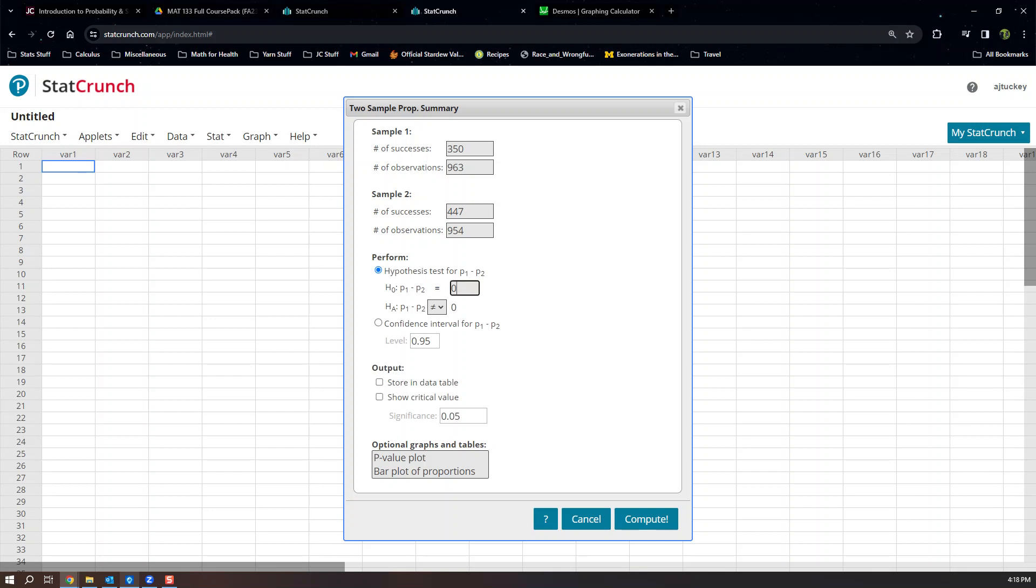And then look right here - see StatCrunch is using that alternative way of writing the hypotheses where they're subtracting. So p1 minus p2 equals - it will always be zero for us in this course - and we're going to change this to a less than because we had a less than problem.